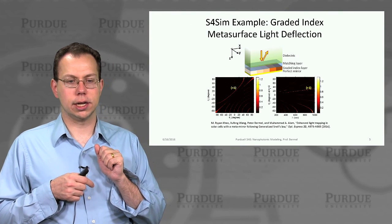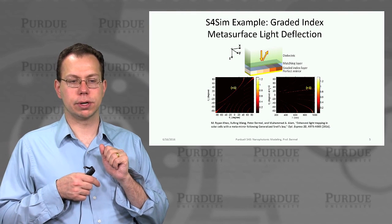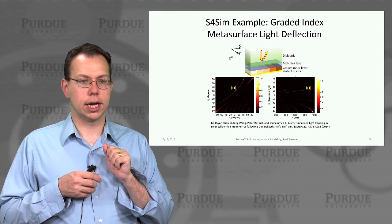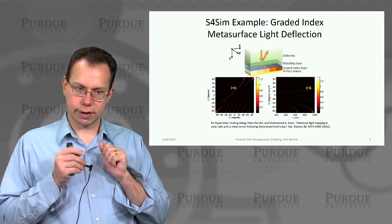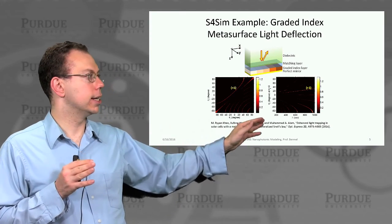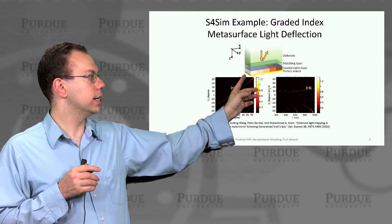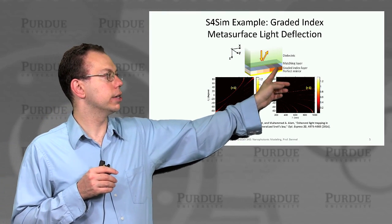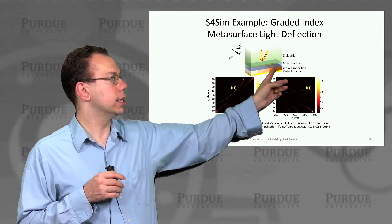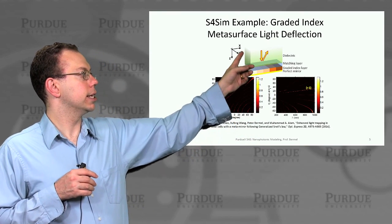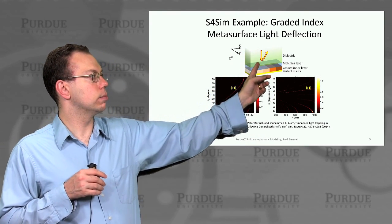And so here, in a very simple example, we're looking at what is the deflection of a metasurface that's composed of nothing more than a graded index. You can see that this graded index, basically the different colors represent different indices, and it's all repeated periodically in this x direction.